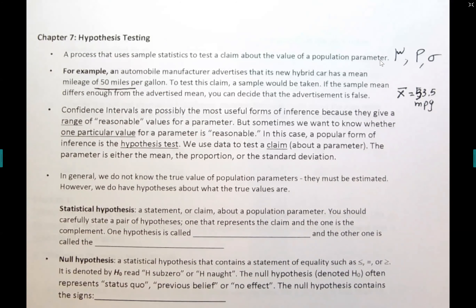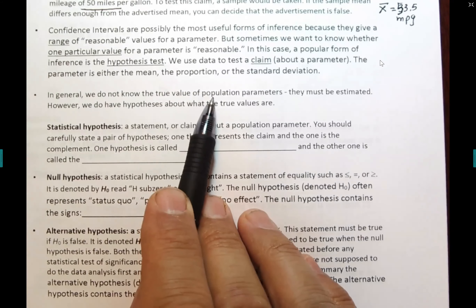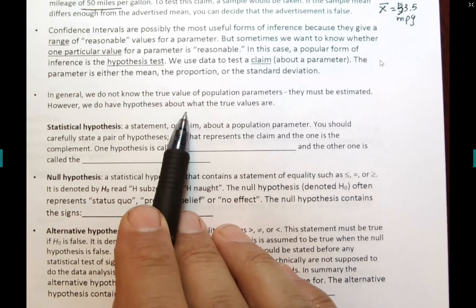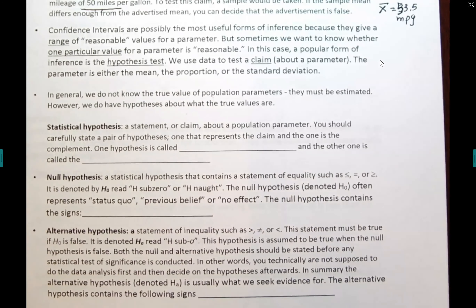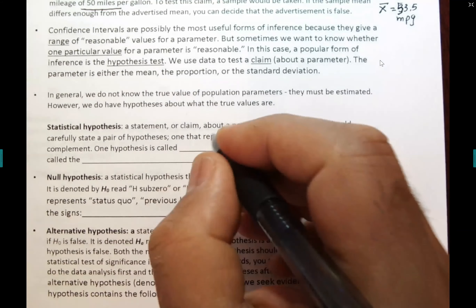In general, we don't know what the true value of the population parameters are, so we estimate them — that's why we do a hypothesis test. A statistical hypothesis is a statement or claim about a population parameter. We state a pair of hypotheses: one that represents the claim and the other the total opposite of the claim. The first one is called the null hypothesis, and the second one is called the alternative hypothesis.